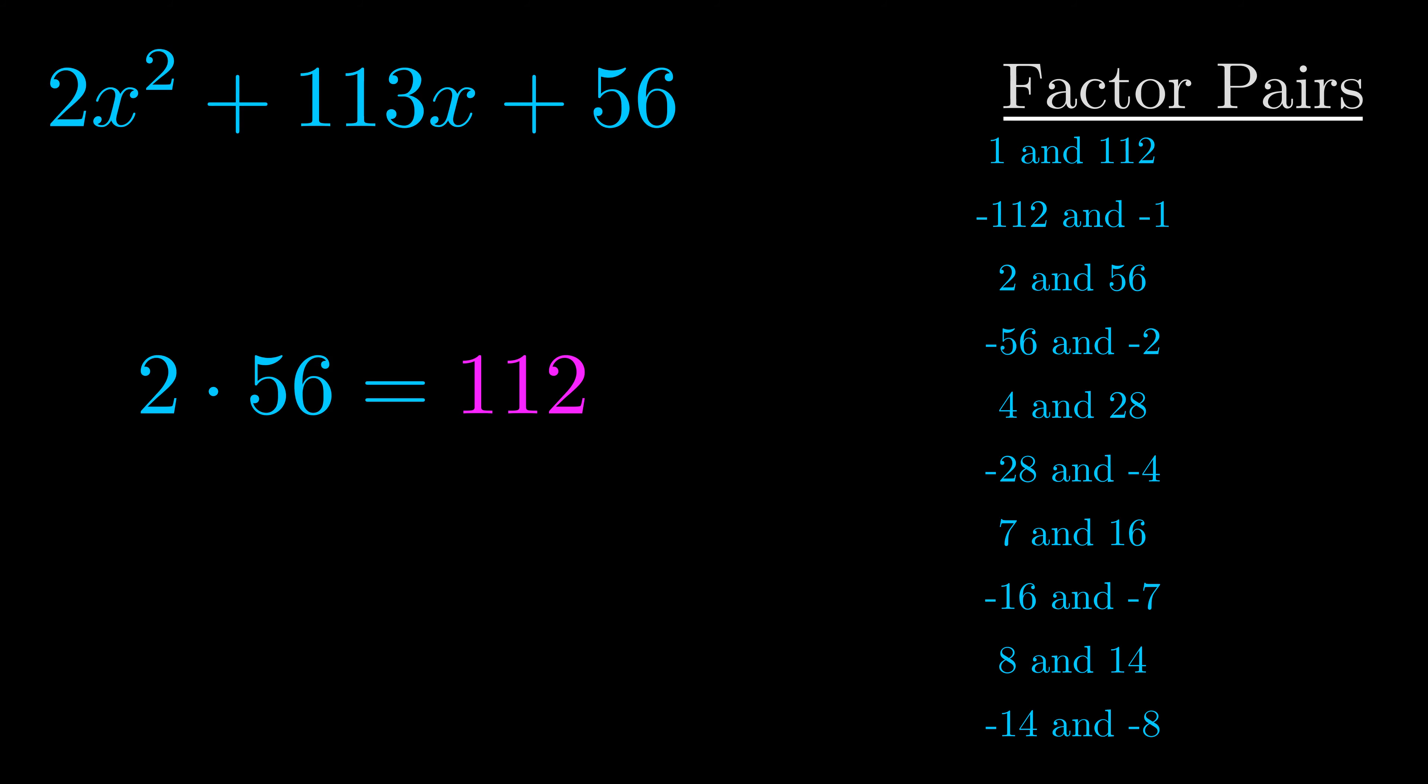The b value is the coefficient on the x term. That's the middle term, the one that we haven't done anything with yet. And really this is the only factor pair that we need.